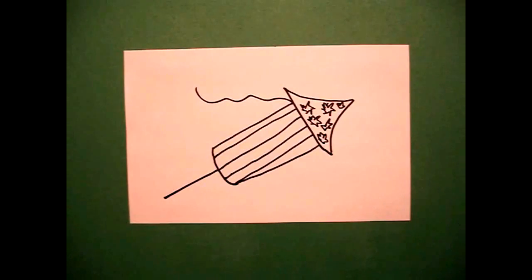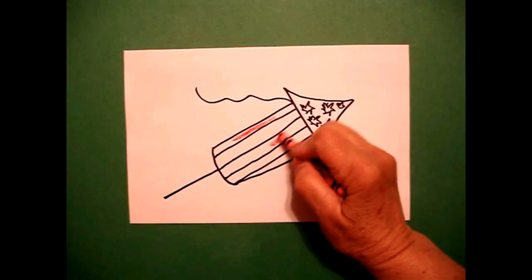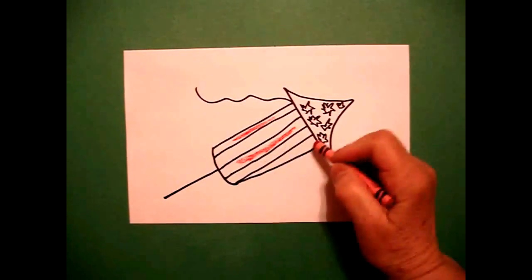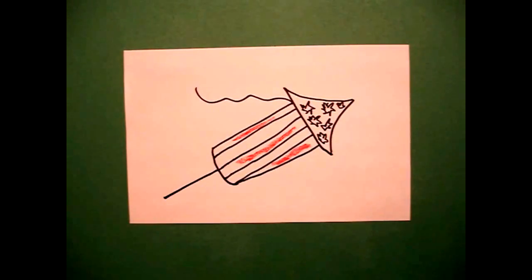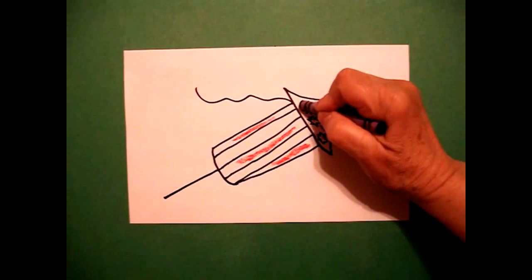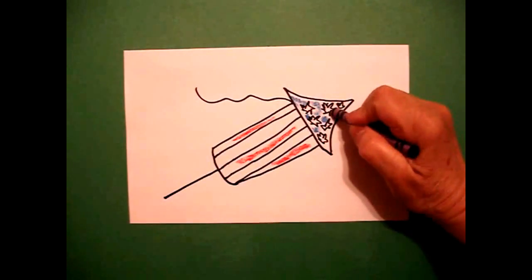Now we're ready to color. This is super easy to color because all we're going to do is make red and white stripes on this section, and carefully use blue to color around all my white stars. Take your time.